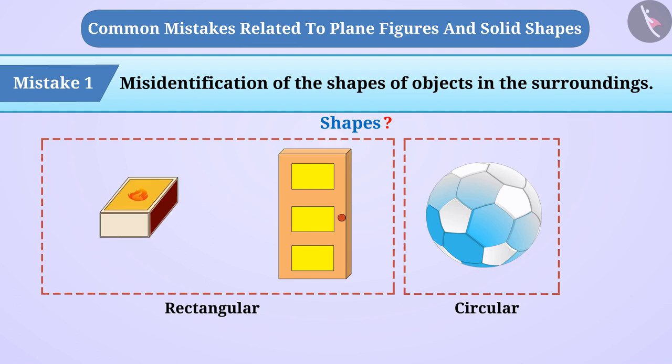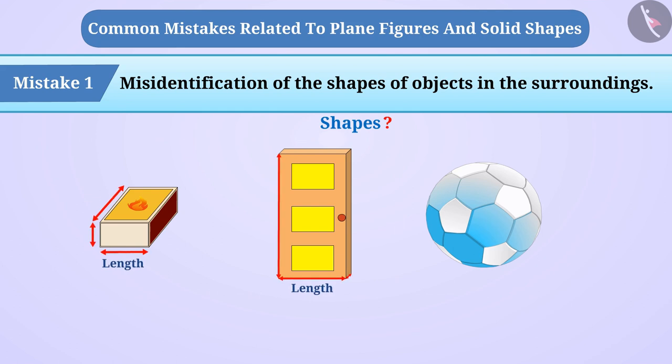Remember that the matchbox and the door have three dimensions such as length, breadth, and height. That is, the matchbox and the door have three dimensions. Therefore, these are three-dimensional shapes which are called cuboid.